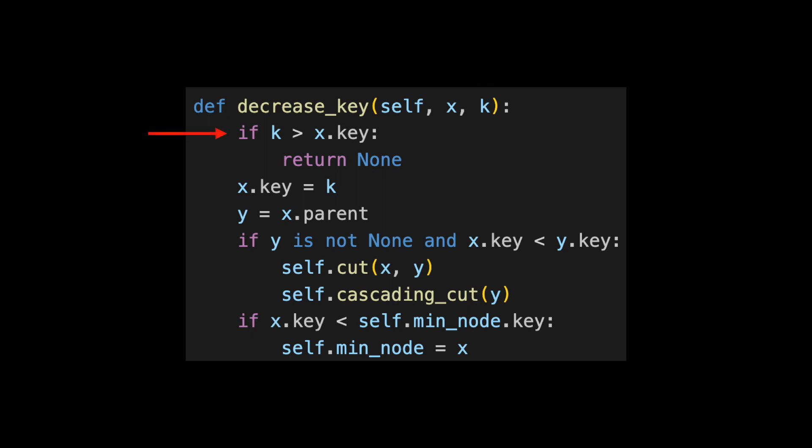We first check if the new key value is greater than the current key value. If it is, we exit the function. Next, we update X's key and set it to K.